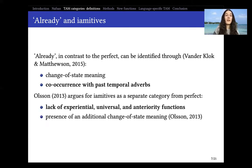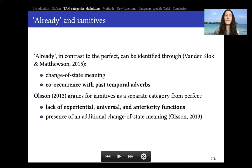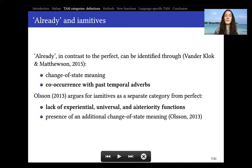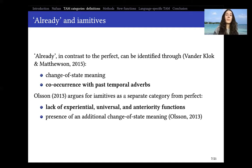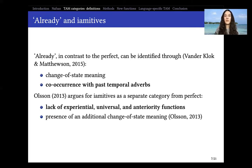Yamitives are a second category proposed by Olson in 2013 as separate from perfect but similar in some aspects. This category would not have experiential, universal, or anteriority functions. It would be a kind of present perfect, additionally having a change-of-state meaning similar to already — a category in between already and perfect. The focus of this talk will be on these temporal adverbs and functions that may be decisive for whether we decide something is a perfect, an already, or a yamitive.